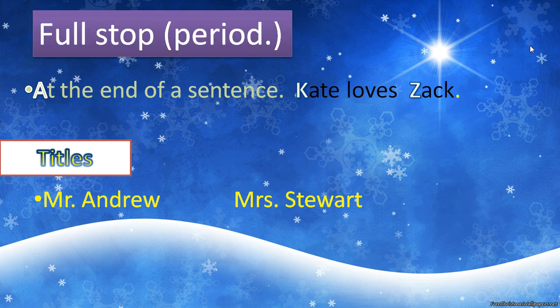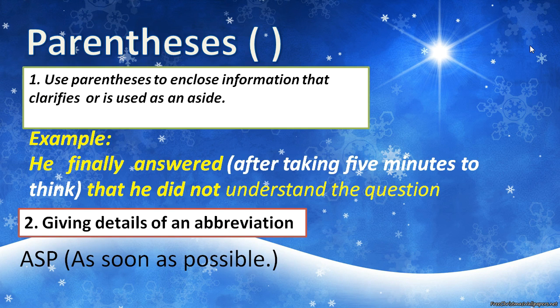Period. We use a period at the end of a sentence — for example, 'Kate loves Zach.' Period. We also use periods in titles like Mr. Andrew or Mrs. Stewart — Mr., Mrs., Ms.